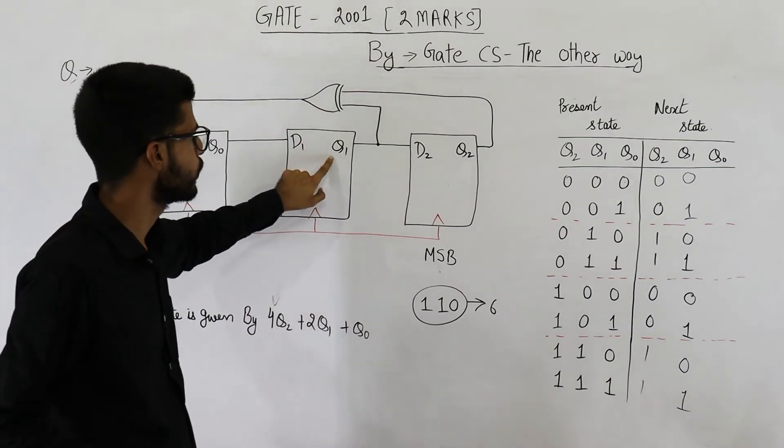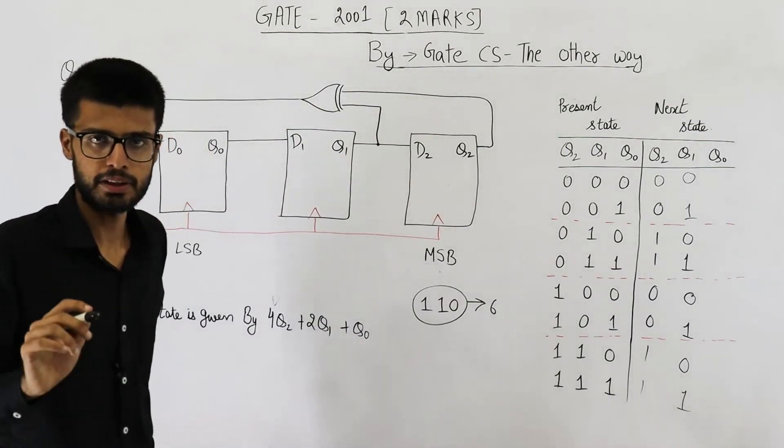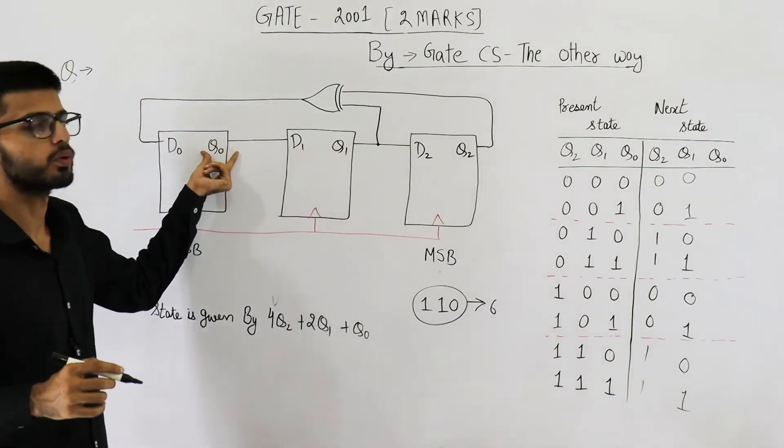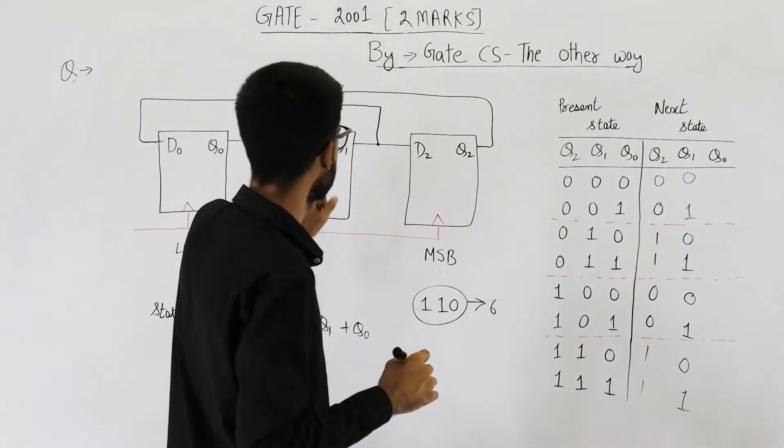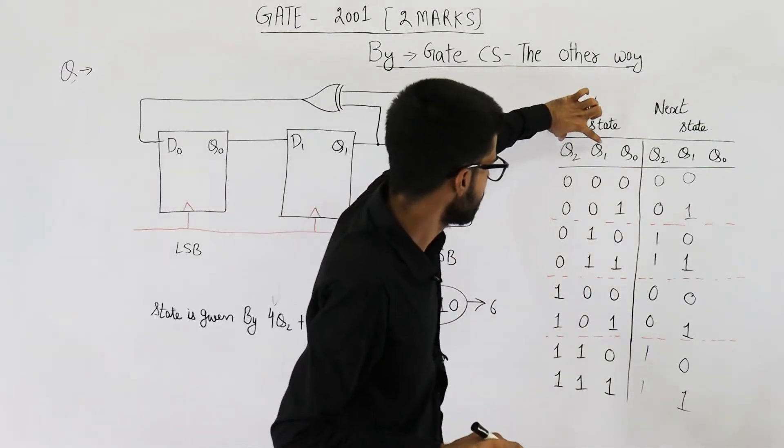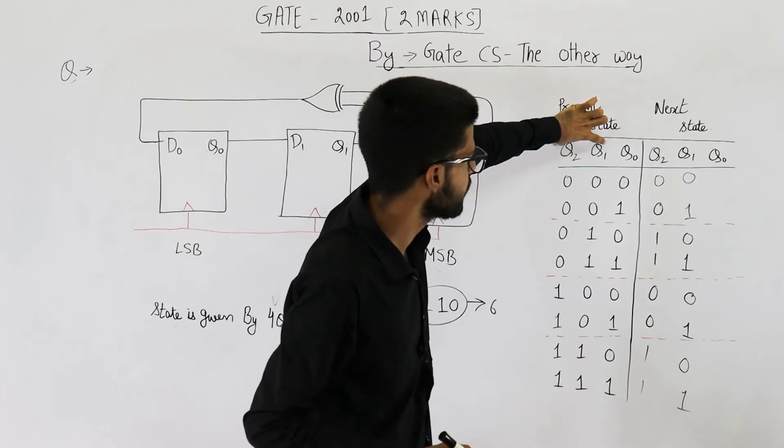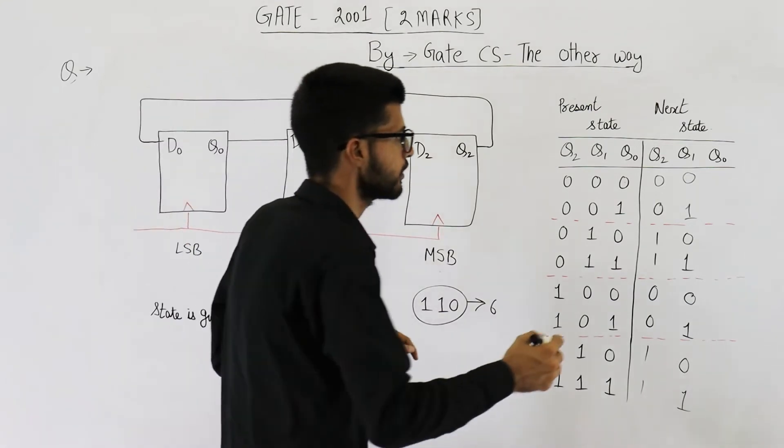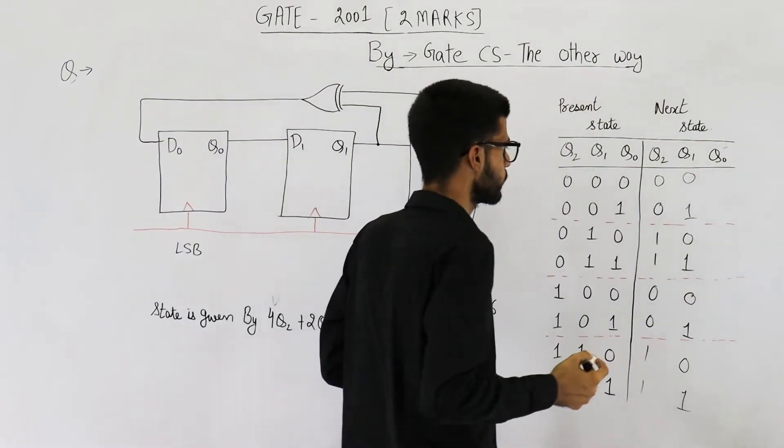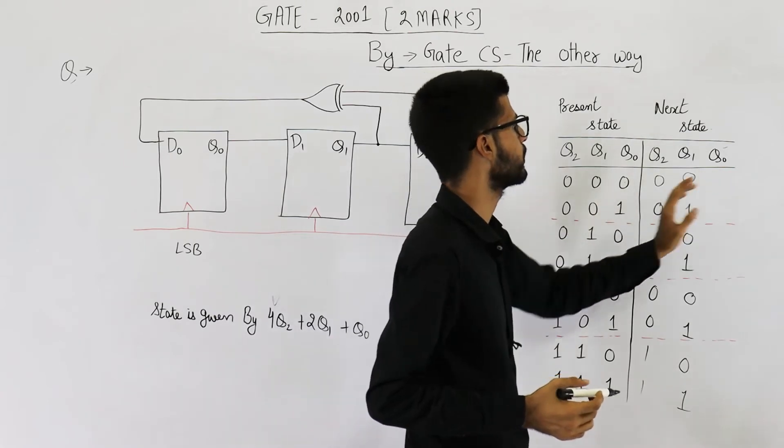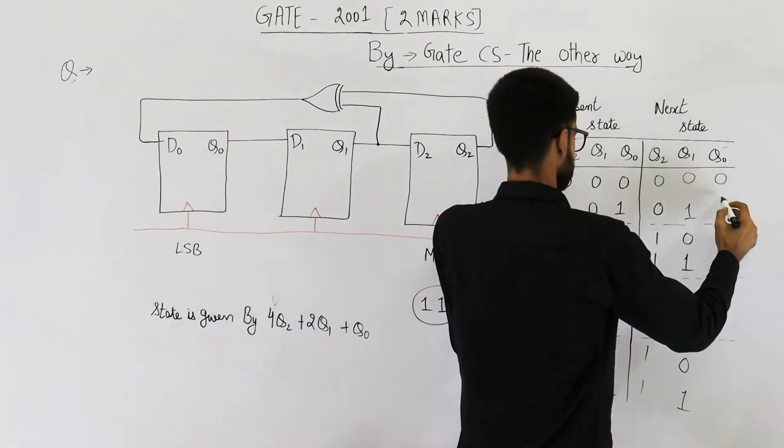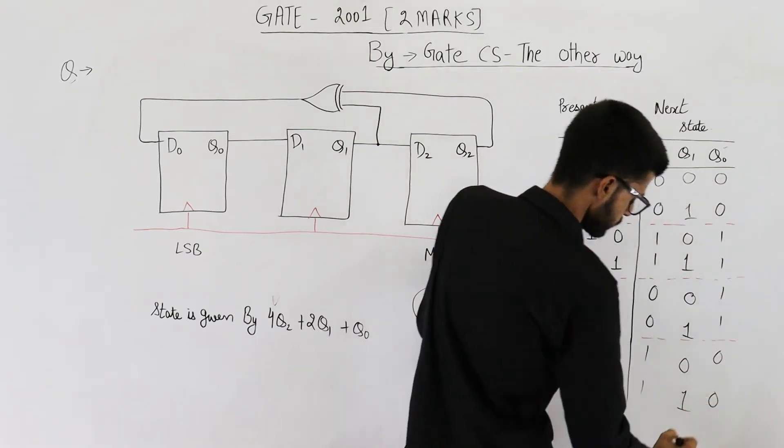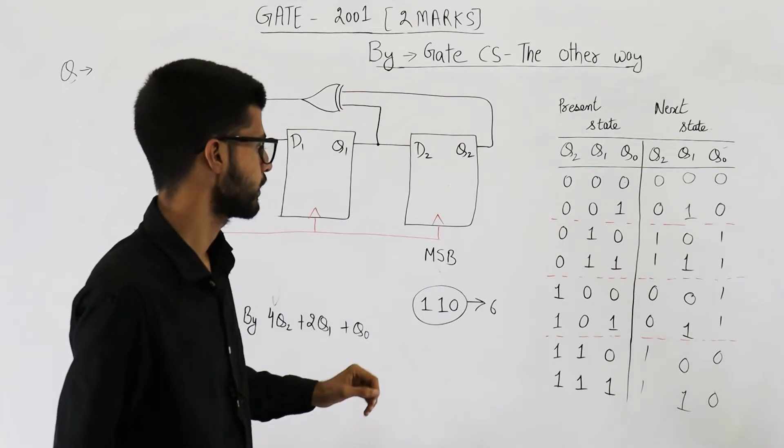D0 is XOR of q1 and q2. That means whatever is the XOR of q1 and q2 will be this output q0. So let me find out XOR of q1 and q2. This is q1 and q2. Their XOR will be given as the next state q0. So this is q0 next, the next state of q0. So their XOR has to be written in this column. That's what you will get upon filling this table.